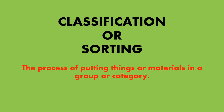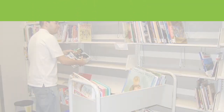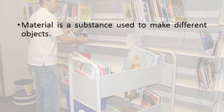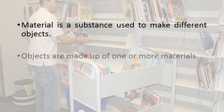So, what is classification or sorting? Classification or sorting can be defined as the process of putting things or certain materials into a particular group or category. A material is a substance that is used to make different kinds of objects, and objects are made up of one or more materials.